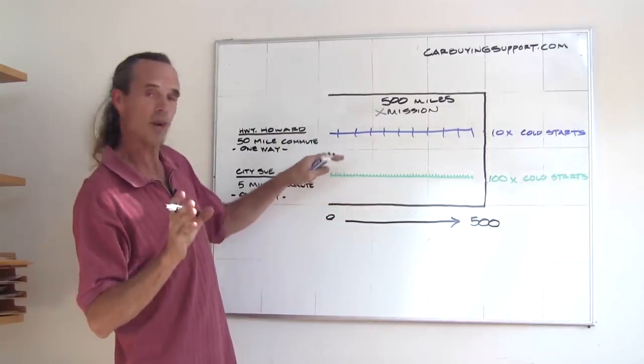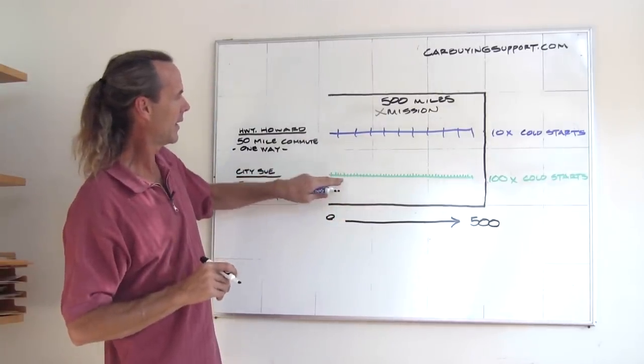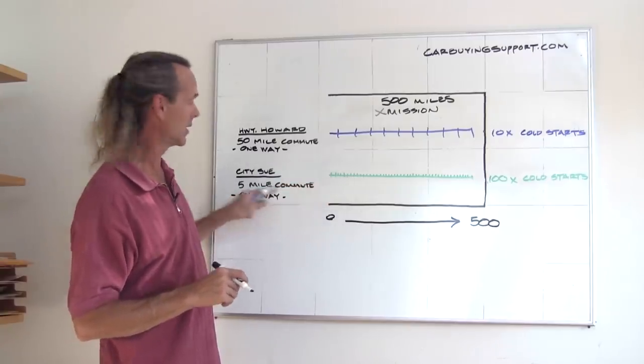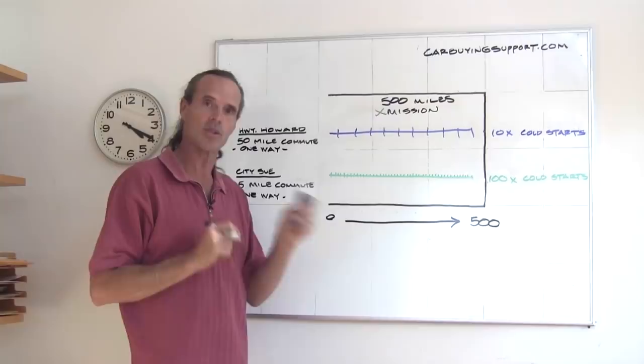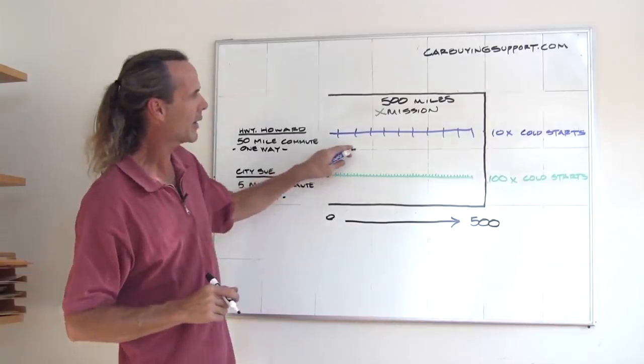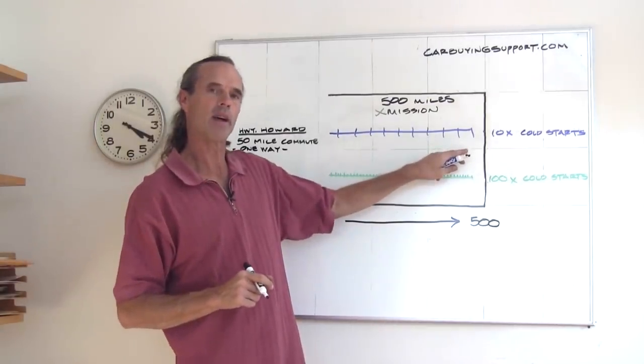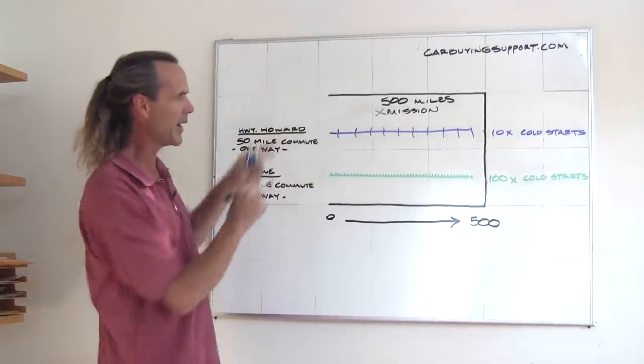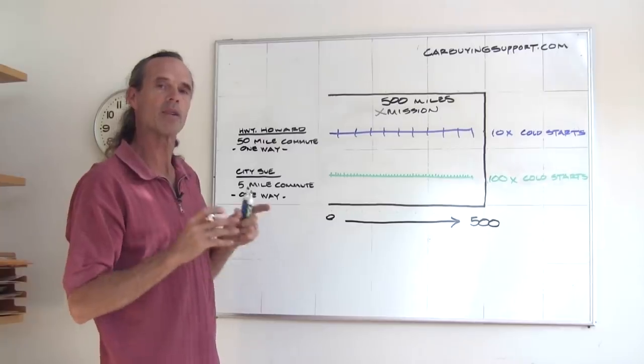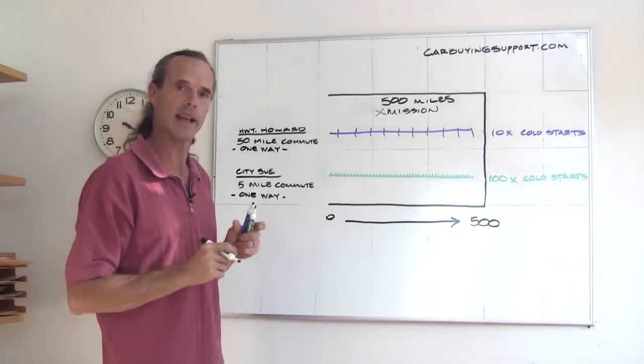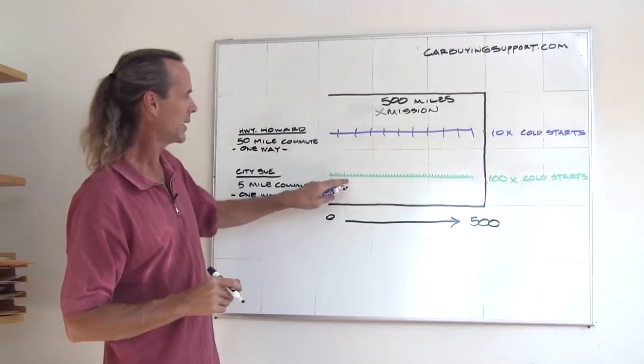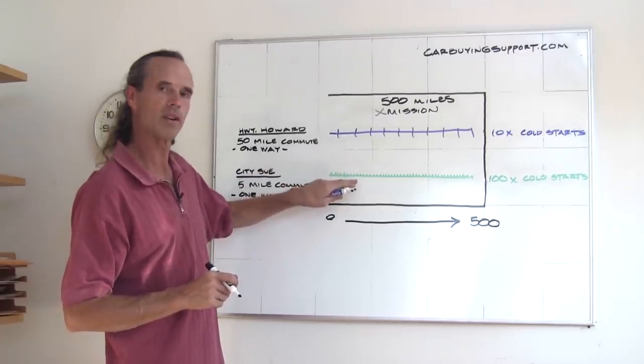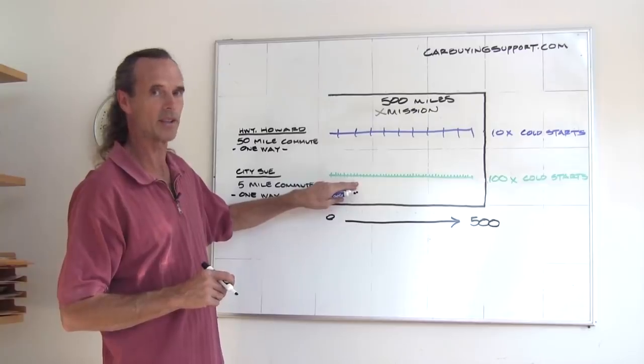Now, that alone is a problem, but then you add to that the fact that there's going to be shifting sequences that City Sue will encounter because it's a lot of stop-and-go, stop-and-go traffic, whereas Highway Howard is cruising along at highway speeds without much shifting going on in that 500 miles. So if you compare the amount of shifting sequences that have to happen, you'll see that City Sue will have a lot more than Highway Howard, and this will also be a lot of cold shifting, which is not a good idea.